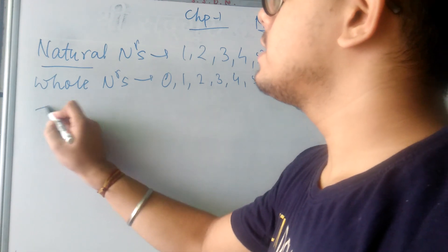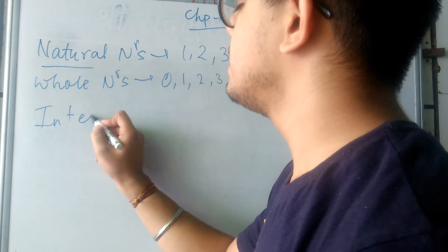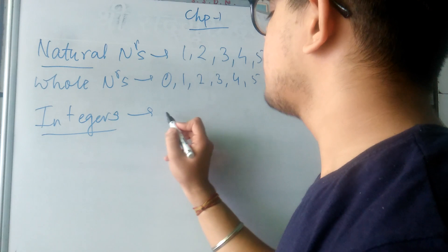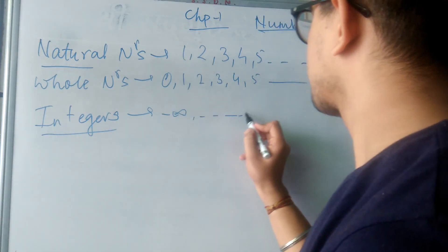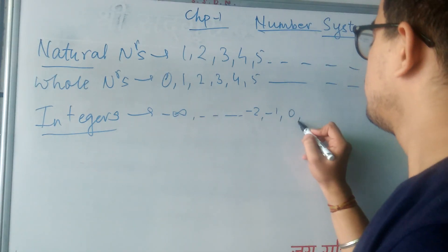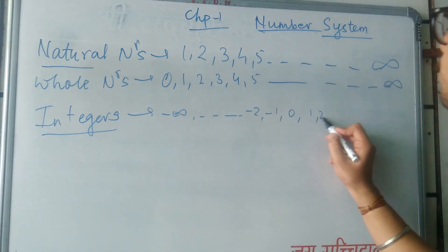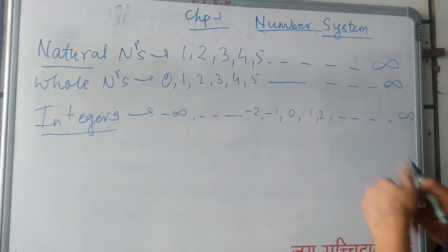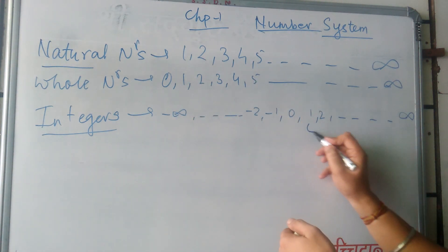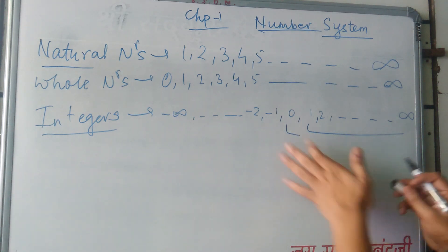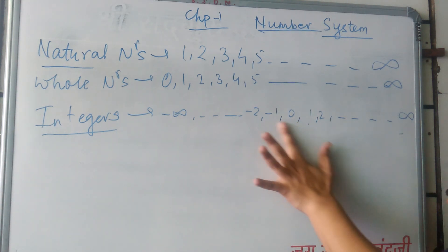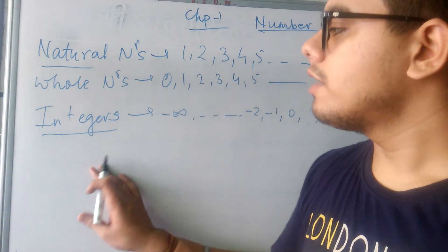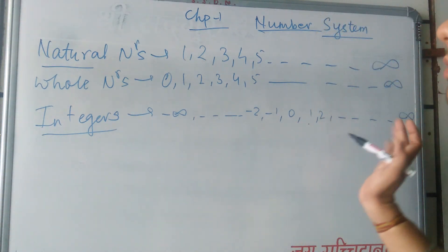Now let us see the third classification — integers. What are integers? Integers are negative numbers, 0, along with positive numbers. So in whole numbers, all natural numbers are included but not negative numbers. In integers you have negative, 0, and positive.